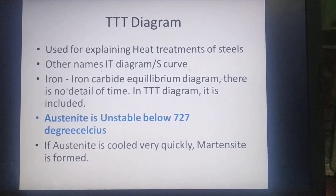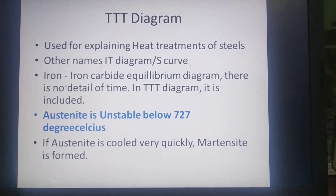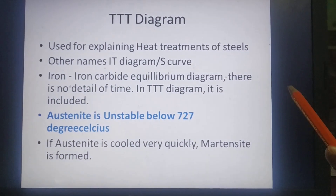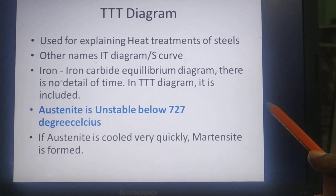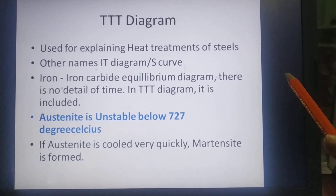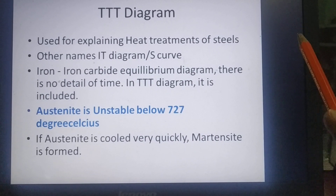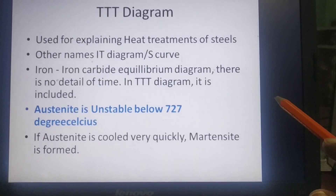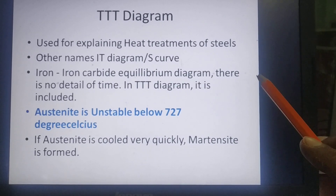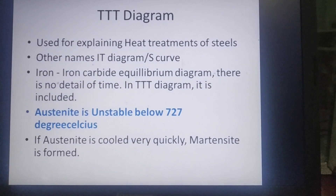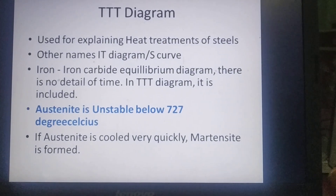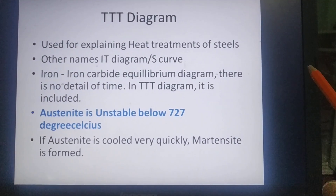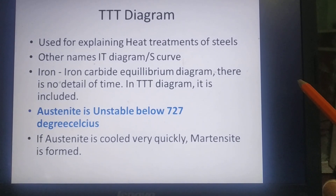The key point behind the construction of the TTT diagram is that austenite is unstable below 727 degrees Celsius. Above 727 degrees Celsius we can maintain austenite for any length of time, but below 727 degrees Celsius if we maintain austenite at a particular temperature it will be transformed into some other microstructure — it is unstable. This detail is recorded in graphical form as the TTT diagram, isothermal transformation diagram, or S curve.